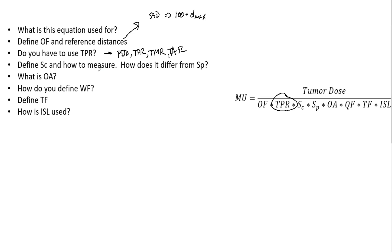Now, the SP is the patient scatter factor. We got the collimator scatter factor, which is SC, and we have the patient scatter factor, which is SP.